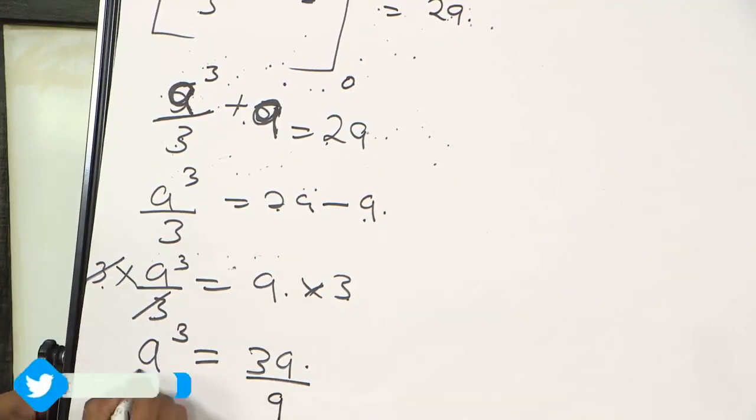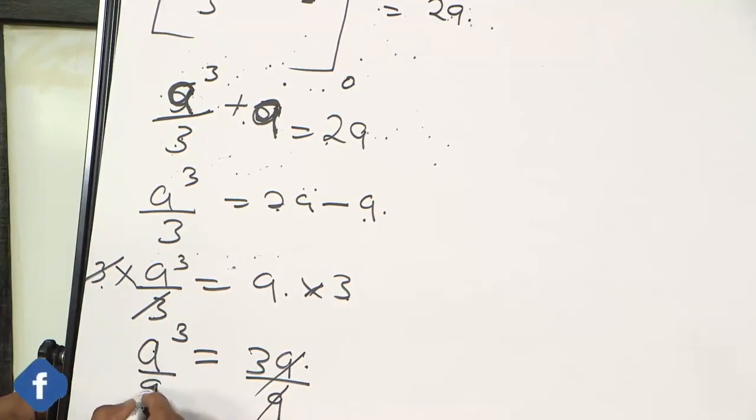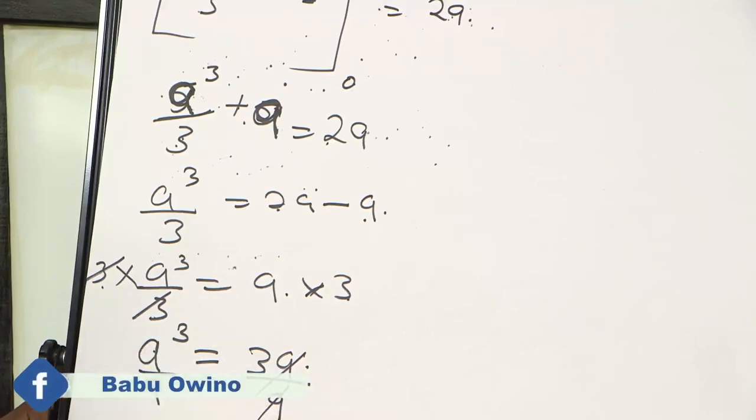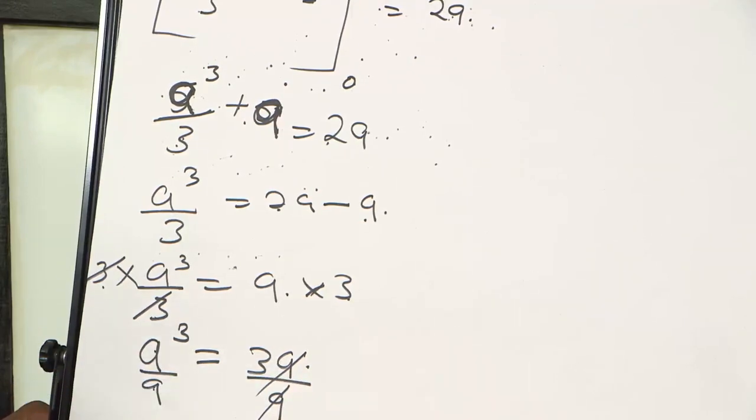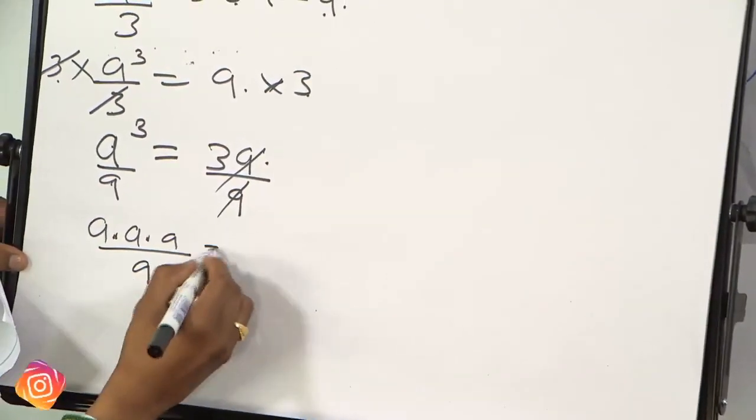Then we can further simplify by dividing by A because A is common. So A and A goes. Therefore if A cubed divided by A, it's like saying A times A times A. When I put dot means times. A times A times A divided by A equals to 3.